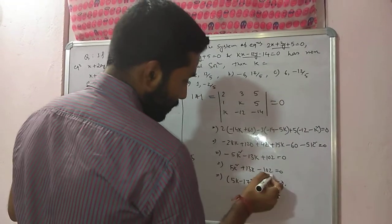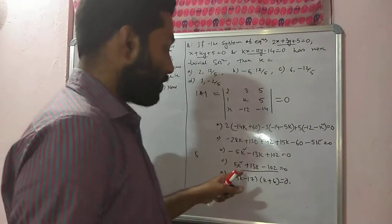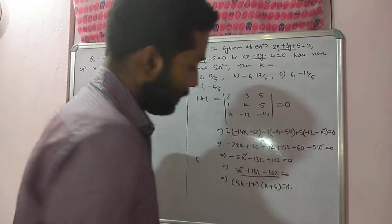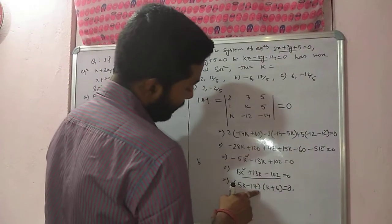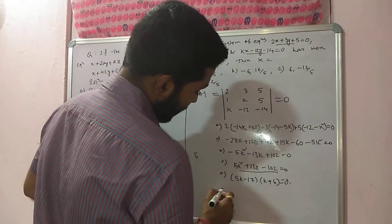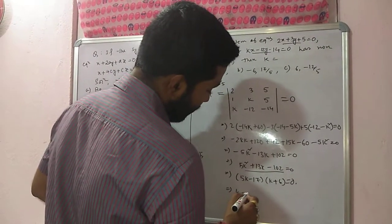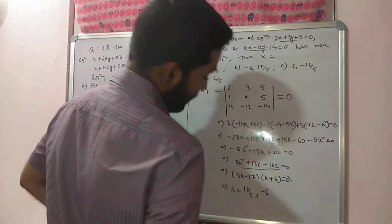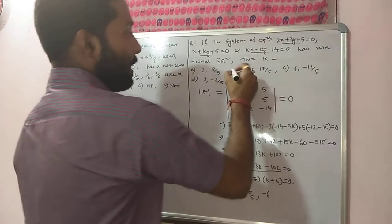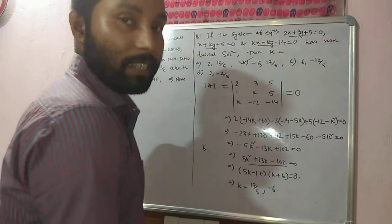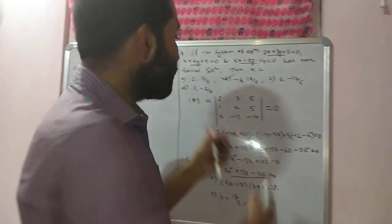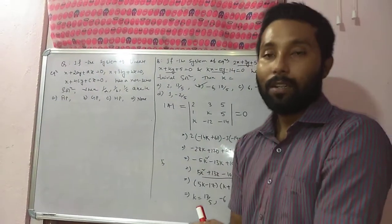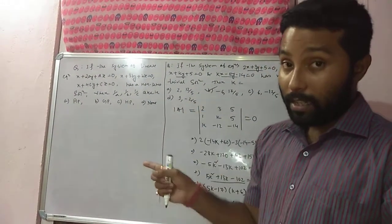You will get 5k square plus 13k minus 102. If I middle term split it, you will get 5k minus 17 into k plus 6. That means k is equal to either 17 by 5 or minus 6. So 17 by 5 and minus 6 is the correct answer. For non-trivial solution, just you have to put determinant of A equal to zero. It is a very easy question.